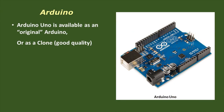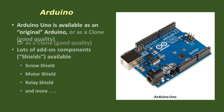The Uno is the most common version of the Arduino. You can purchase an original Arduino Uno via the internet for around $24, or you can purchase a good quality clone for about half that price. There are also lots of add-on units, known as shields, that you can purchase for the Arduino.